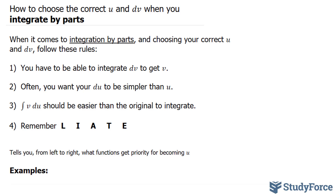When it comes to integration by parts and choosing your correct u and dv, follow these rules. First, you have to be able to integrate dv to get v. Often you want your du to be simpler than your u. Three, integrating v du should be easier than the original to integrate. And four, you want to remember the acronym LIATE, which tells you from left to right which functions get priority for becoming u.